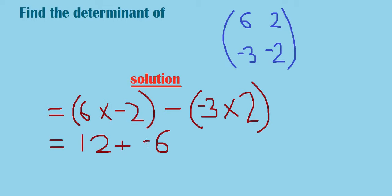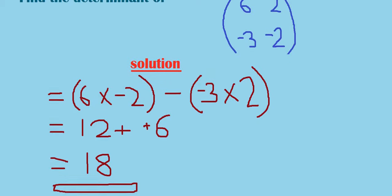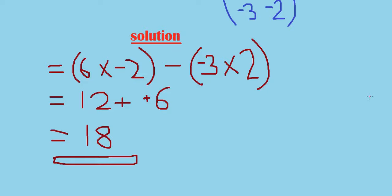So when we add the two numbers here we get 18 positive. This will be our determinant. Hope you have understood.